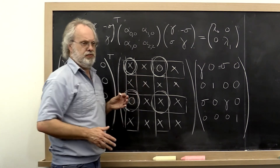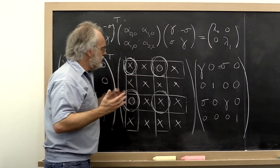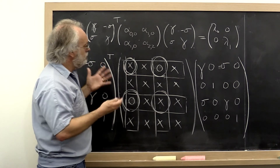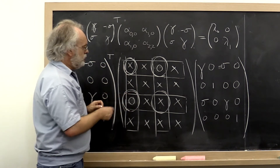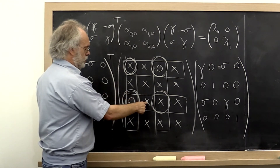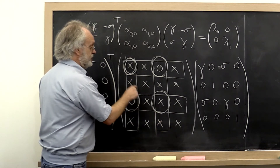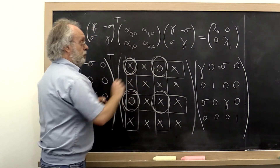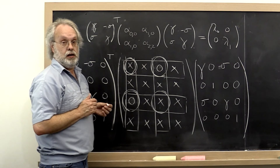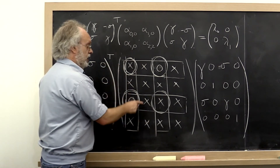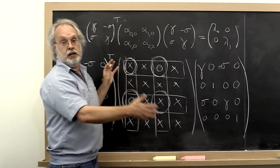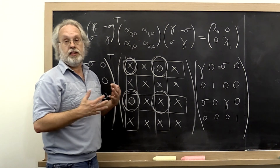Moreover, you're hopping all over the matrix. So the way it's done in practice, typically, is through a cyclic method. A column cyclic Jacobi method is very organized: zero this one out first, then this one, then this one, and so on. At that point, you've zeroed out every off-diagonal pair once — that's called a sweep of the Jacobi method. Then you go back to the beginning and do it again and again. You can prove that if you do a column cyclic Jacobi method, it will actually converge.